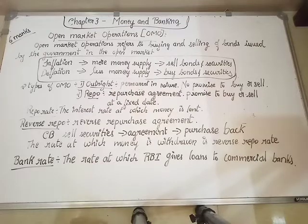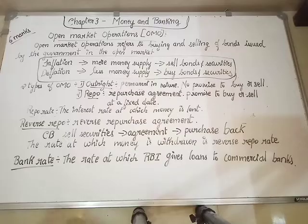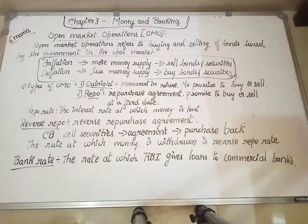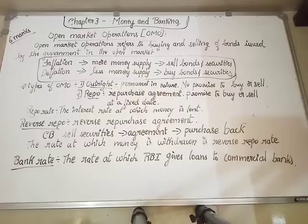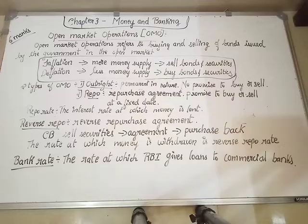But does the government directly do that? No. It does so through an agency, which is the RBI — the central bank. The government uses RBI to buy and sell bonds and securities with commercial banks and the public. That is open market operations.